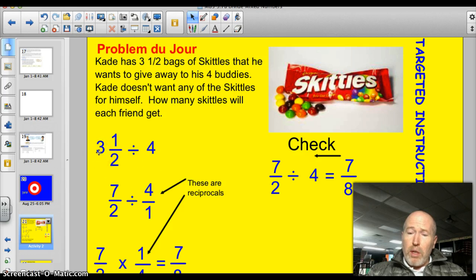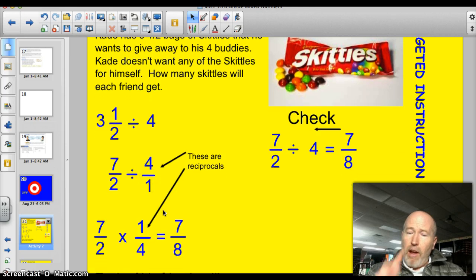You change the mixed number into an improper fraction. So, 3 times 2 is 6 plus 1 gives me 7/2. So, there's my improper fraction and I'm dividing it by 4. Divided by 4 over 1. What do you suppose I do? Flip it. You betcha. Use the reciprocal and then you multiply. So, you get 7 times 1 is 7. 4 times 2 is 8. So, you get 7/8.